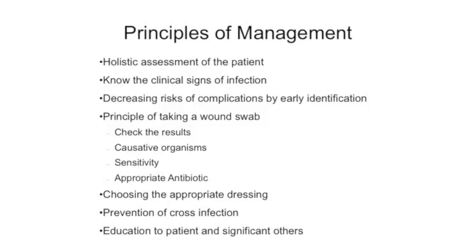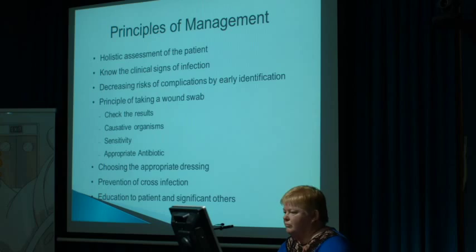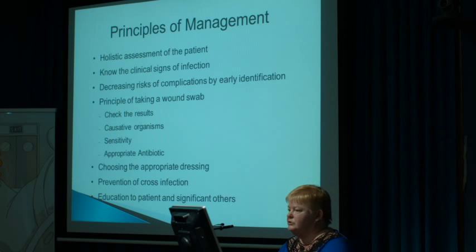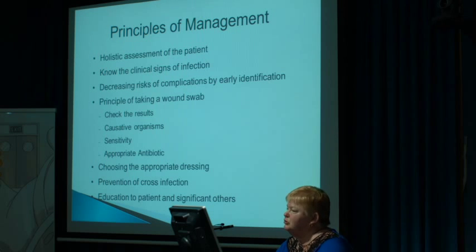You want to know how to take a wound swab — and if you take one, don't forget you've taken it. Check the results. Look for the causative organism and then choose your most appropriate antibiotics. I use the Levine method because when you use that, you usually grow something. If you do it across the surface of the wound, you're just picking up surface bacteria. With the Levine method, even though it sometimes hurts a little, you get a result, and that's what you want.